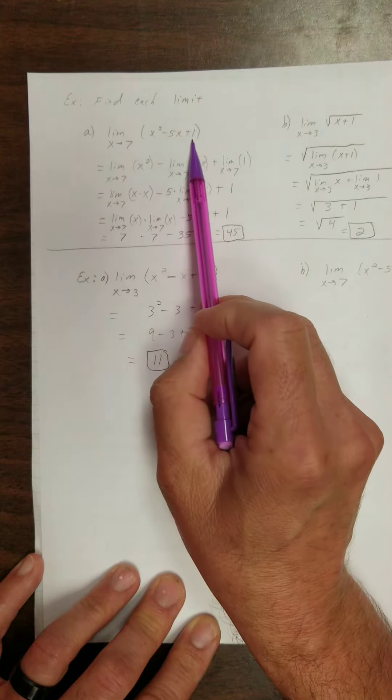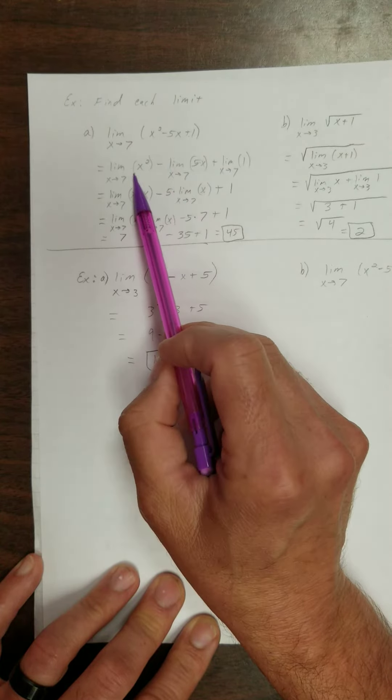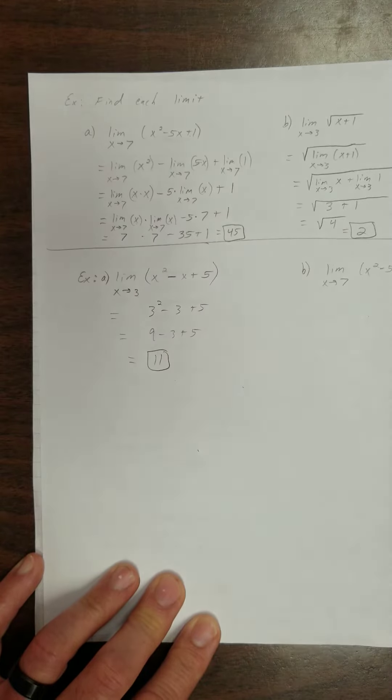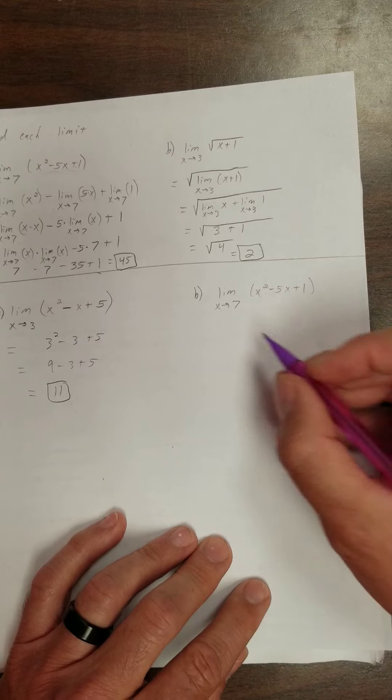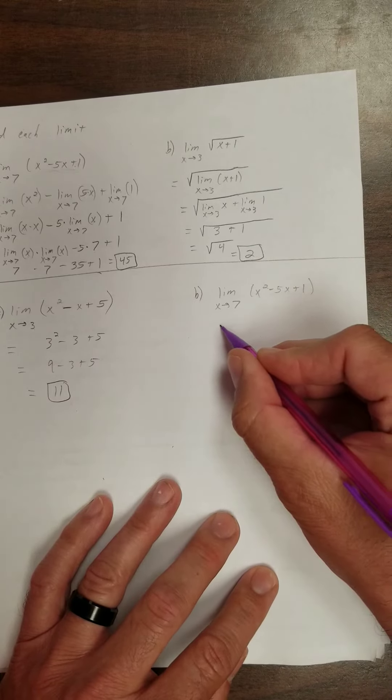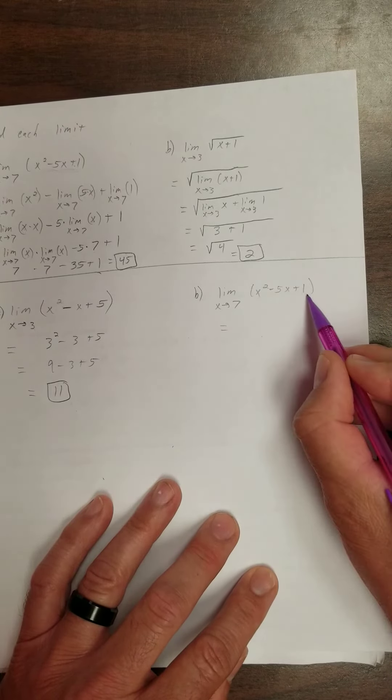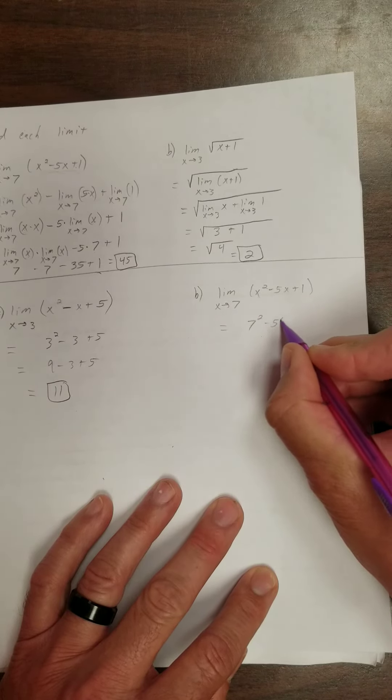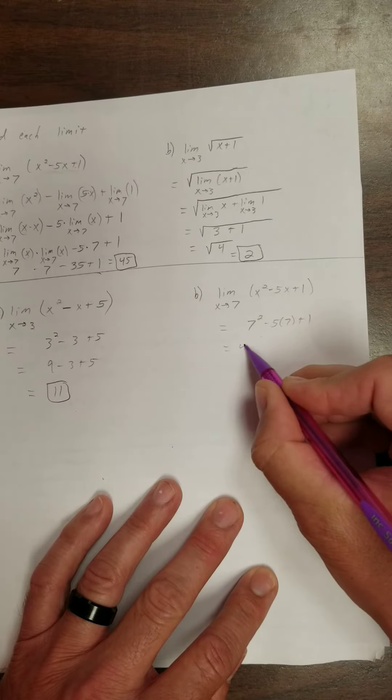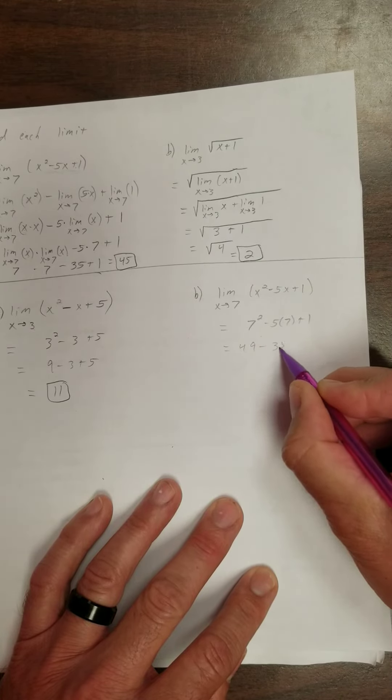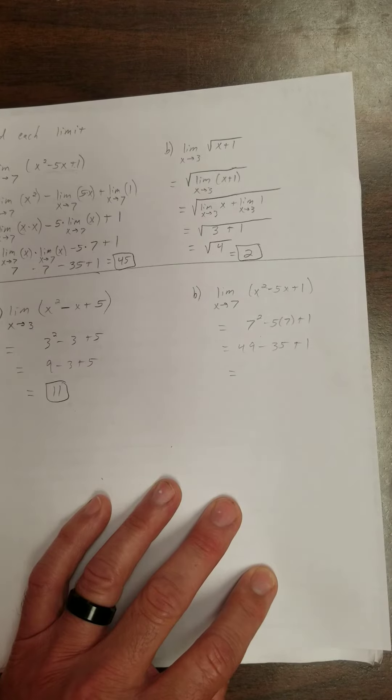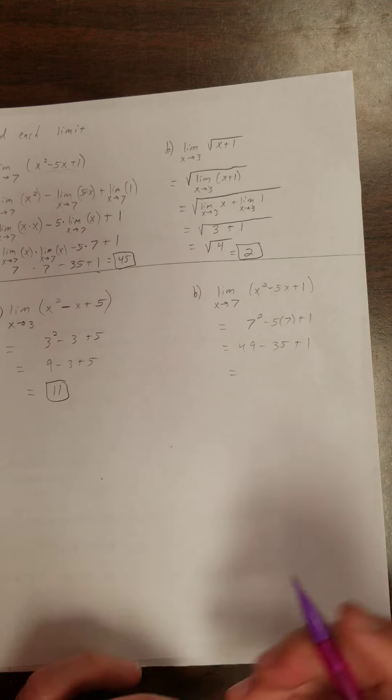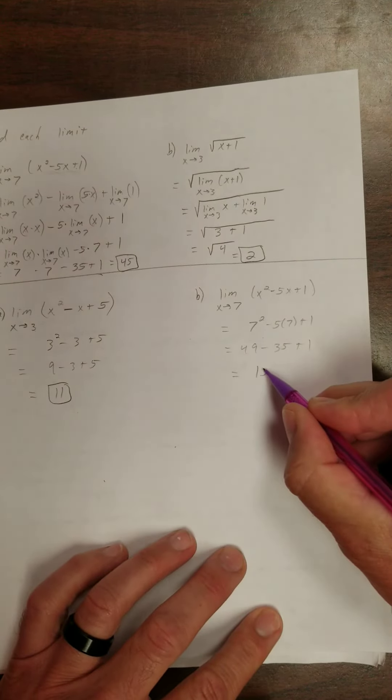Well, how about we redo this problem that we did earlier, but instead of breaking it up and using all those properties, we just say, well, that's just a polynomial. So we've got that problem right in here. So now that we know that statement, we could say, here's a polynomial. Let's just evaluate it at 7. 7 squared minus 5 times 7 plus 1. It's 49 minus 35 plus 1. 49 minus 35 gives me what? 14 plus 1 is what? 15.